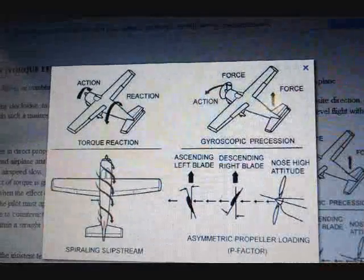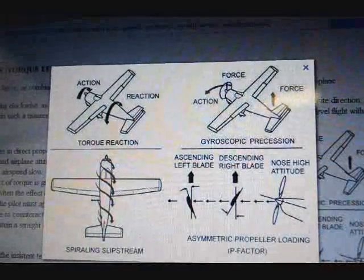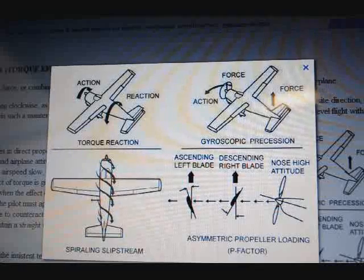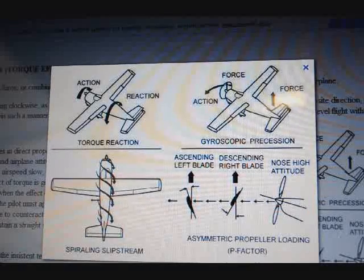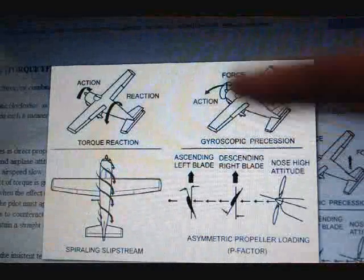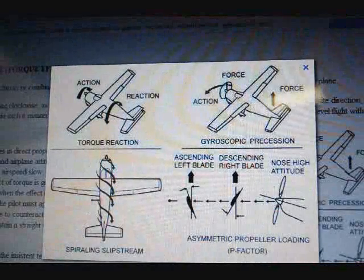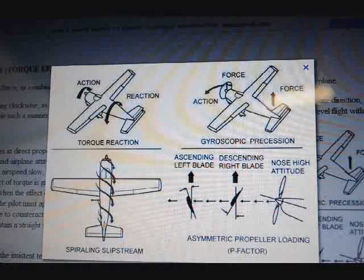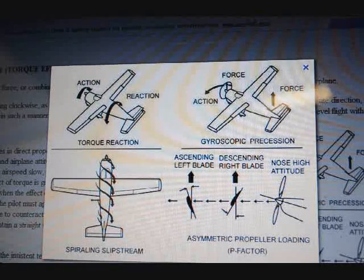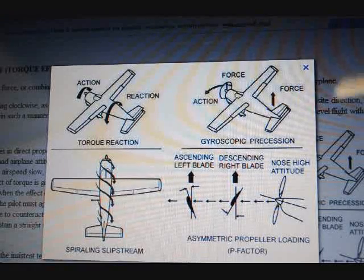This first little picture here shows torque. What torque is, is for every action there is an equal but opposite reaction. With the propeller spinning in a clockwise rotational manner when viewed from the cockpit, the airframe wants to turn the opposite direction. That's the effect of torque on the aircraft.